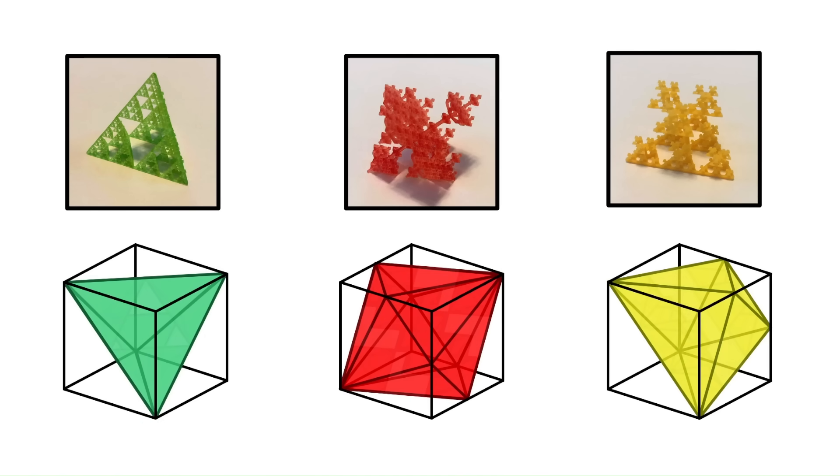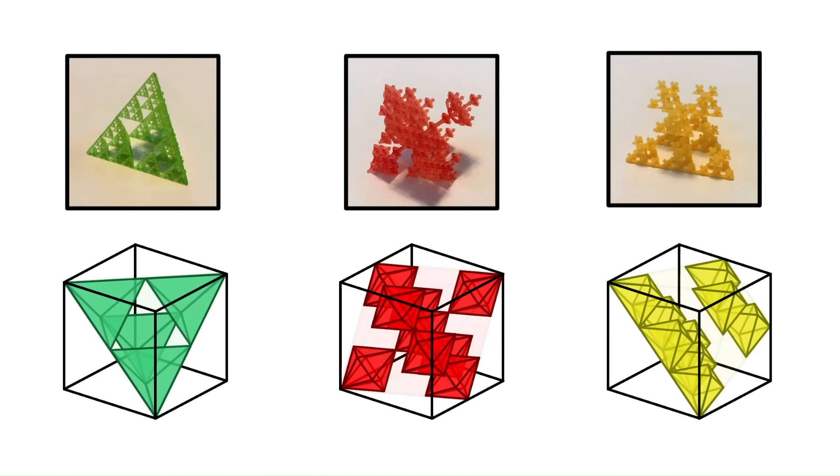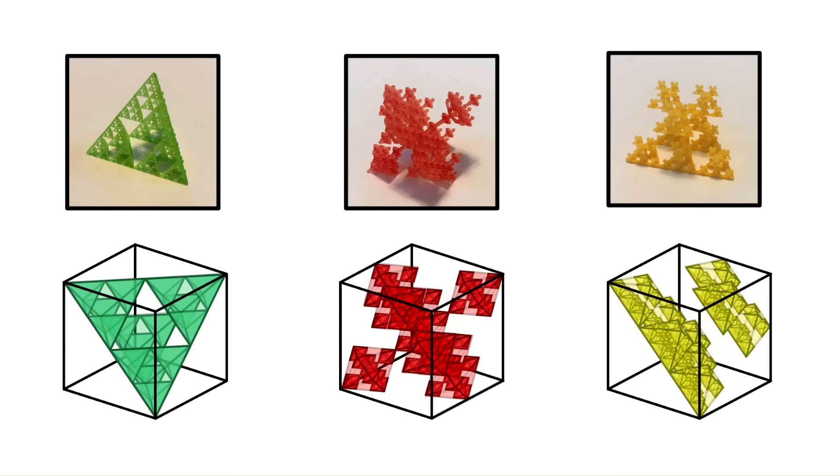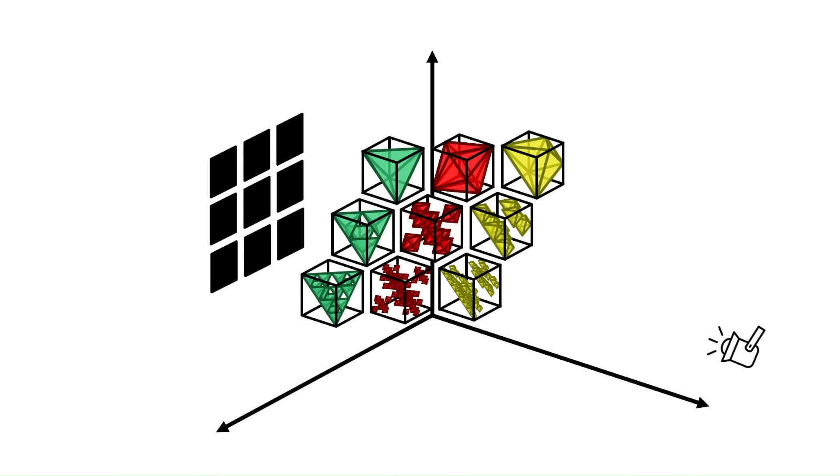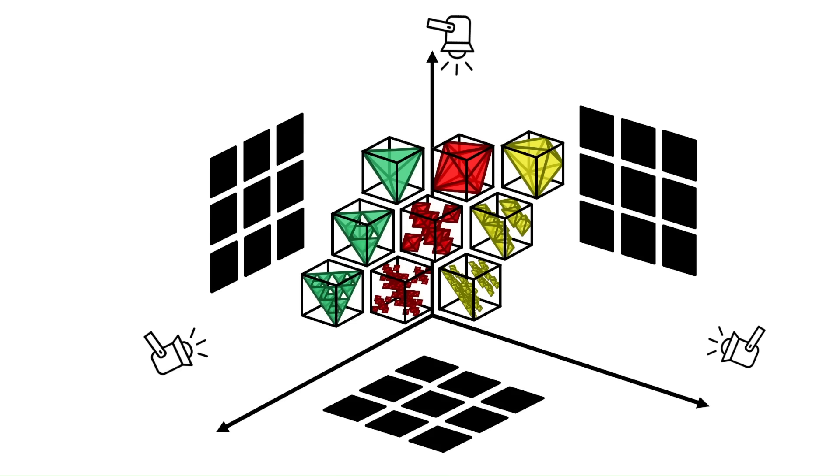And these shapes can be turned into fractals by replacing them with smaller copies of themselves in a certain pattern and repeating. What's amazing is that all of these iterations are examples of imaginary cubes, including the original three shapes. How cool is that?